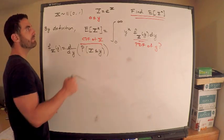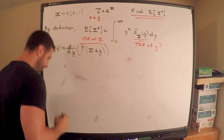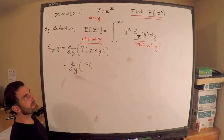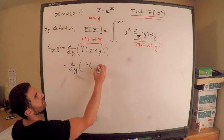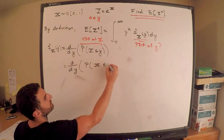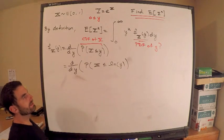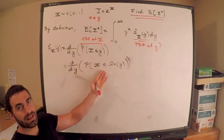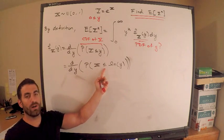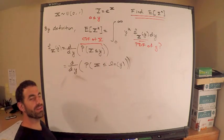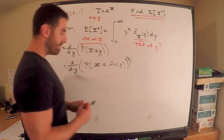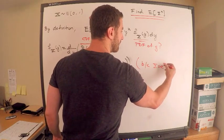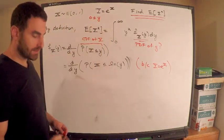So the PDF of Y is equal to the derivative with respect to Y of probability that capital Y is less than or equal to little y. And I know you're sitting there saying, yes, this is absolutely true. If I differentiate the CDF, which is this guy, the CDF of Y, I'll absolutely get the PDF of Y. So can we find this? We definitely can.